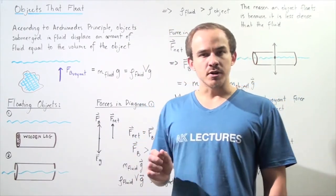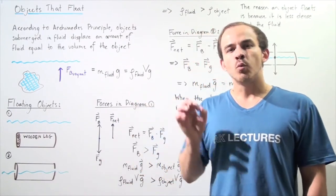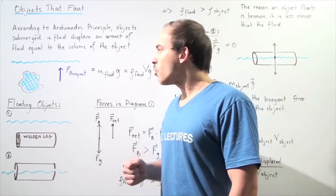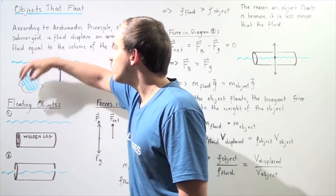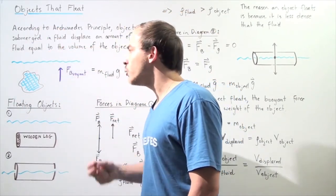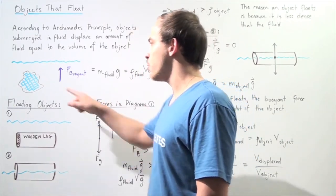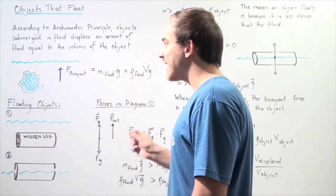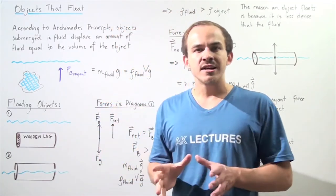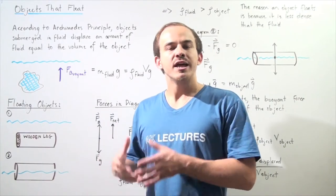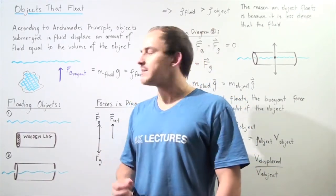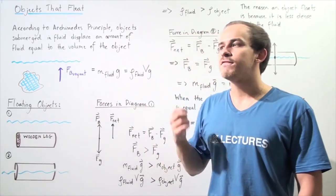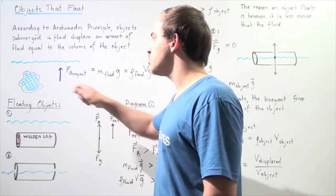According to Archimedes' Principle, an object that is submerged into a fluid will displace a volume of fluid that is equal to the volume of that object. For example, if we take an object and submerge it into our fluid, the volume of fluid displaced is equal to the volume of the object itself. The buoyant force acting on that object can be calculated by taking the product of the mass of the fluid displaced and the gravitational constant g. The mass of the fluid is simply the density of the fluid multiplied by the volume of fluid displaced, which is equal to the volume of the object.